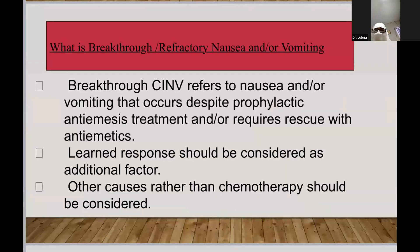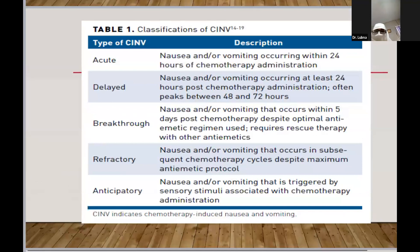Breakthrough and refractory nausea and vomiting can be classified simultaneously. Breakthrough CINV refers to vomiting that occurs in patients despite prophylactic antiemetic treatment — the patient develops nausea and vomiting despite antiemetics and requires rescue antiemetic therapy. Other causes of nausea and vomiting should also be ruled out. Breakthrough CINV usually occurs within five days despite an optimal antiemetic regimen. Refractory nausea and vomiting occurs despite a maximum antiemetic protocol.